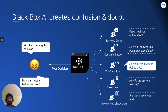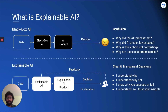On top of this, the problem with black box AI is that it creates confusion and doubt by its very nature. What is explainable AI? For our purposes, we will consider explainable AI to be the ability to explain the decision of a black box AI model in terms of its inputs — explaining the output in terms of its inputs.